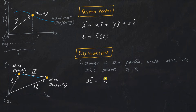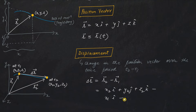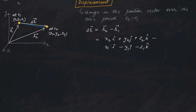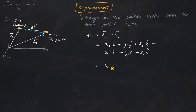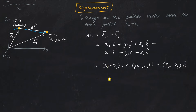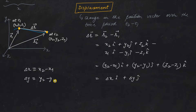Delta r equals r2 minus r1. r2 is x2 i-cap plus y2 j-cap plus z2 k-cap, and r1 is x1 i-cap plus y1 j-cap plus z1 k-cap. Subtracting the individual components along x, y, and z axes gives delta r equals (x2 minus x1) i-cap plus (y2 minus y1) j-cap plus (z2 minus z1) k-cap. This can simply be written as delta-x i-cap plus delta-y j-cap plus delta-z k-cap, where delta-x, delta-y, and delta-z represent the changes along the x, y, and z axes respectively.